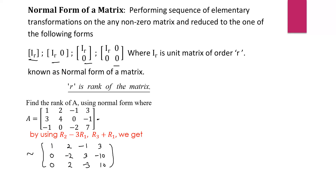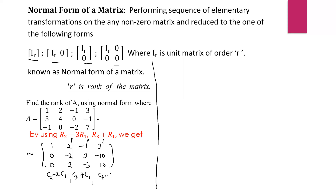Now after performing the row transformation, we perform the column transformation. We want 0 here, here, and here. How do we get 0 in column 2? We perform C2 minus 2 times C1. How do we get 0 in column 3? We just add column 1, that is C3 plus C1. And how do we get 0 in column 4? That is C4 minus 3 times C1. The operation is performed on the second, third, and fourth columns. First column as it is: 1, 0, 0, 0.